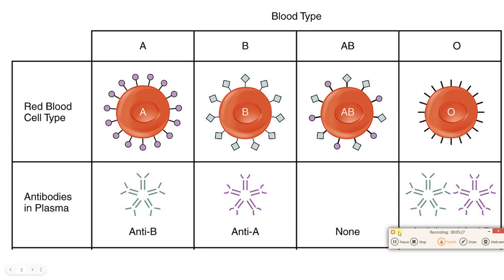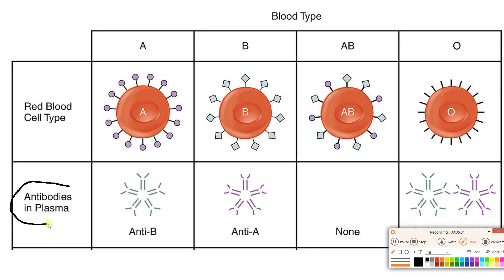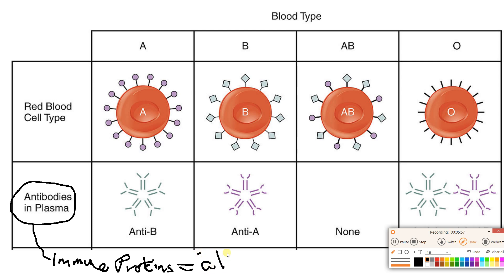Now we're going to add something else to the mix: antibodies, which exist in your plasma. Antibodies are immune proteins, and what they do is attack foreign antigens. So antibodies are immune proteins found in your plasma that attack foreign antigens.